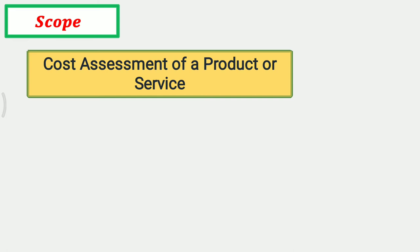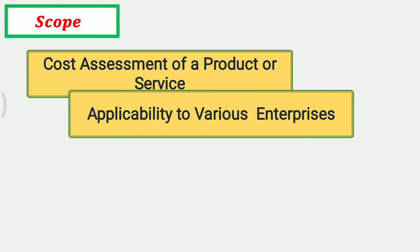The standard on classification of cost should be applied in assessment of cost of a product or service, and in the application of costing technique in case of management decision making by the manufacturing industries in India. The second point of scope is applicability to various enterprises. The standard is to be followed by an enterprise whether covered under section 209(1)(d) of the Companies Act 1956 or not, to classify cost in order to prepare cost statements on a uniform basis to make it relevant and understandable for effective cost management.